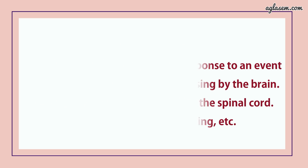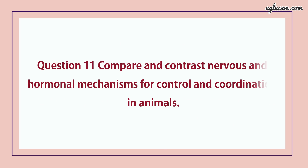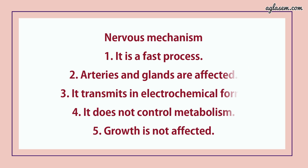Question number 11 says, compare and contrast nervous and hormonal mechanisms for control and coordination in animals. Answer — first, let's talk about the nervous mechanism. First point: it is a fast process. Second: arteries and glands are affected. Third: it transmits in electrochemical form. Fourth: it does not control metabolism. And the fifth point: growth is not affected.